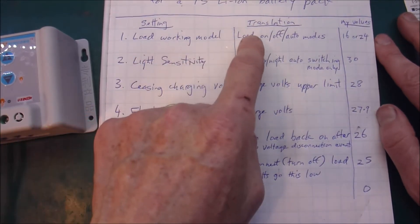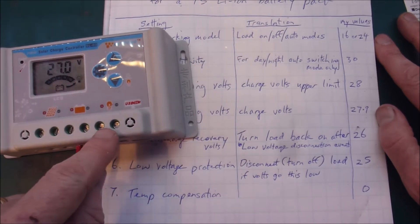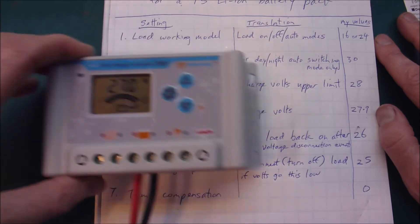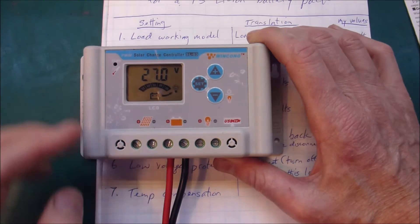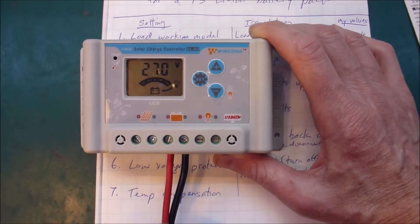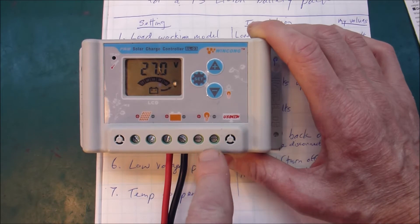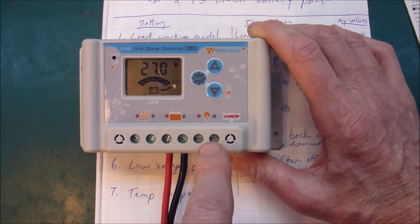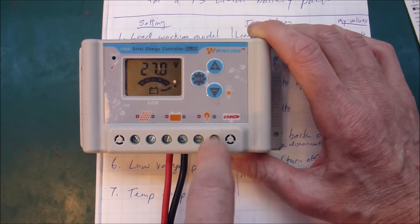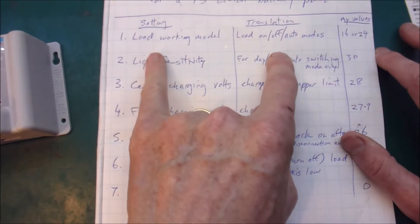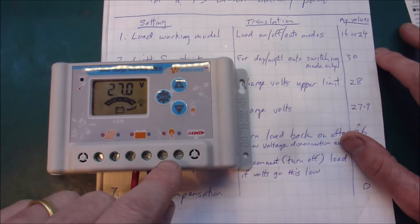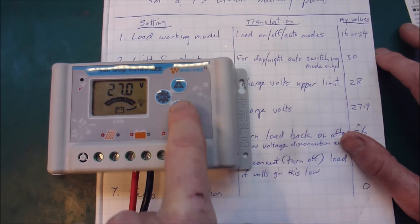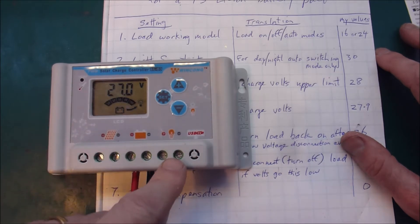So load-width model is for adjusting the way that it turns the load off and on. Now if you are using this with a powerwall you've probably got an inverter, and in which case you probably have it connected directly to the batteries. You don't have it running out of this load switch. But if you did run your load through this switch then this setting here adjusts whether or not you can turn this off and on using this switch here. That's one of the modes. Another mode is that this is on 24-7.